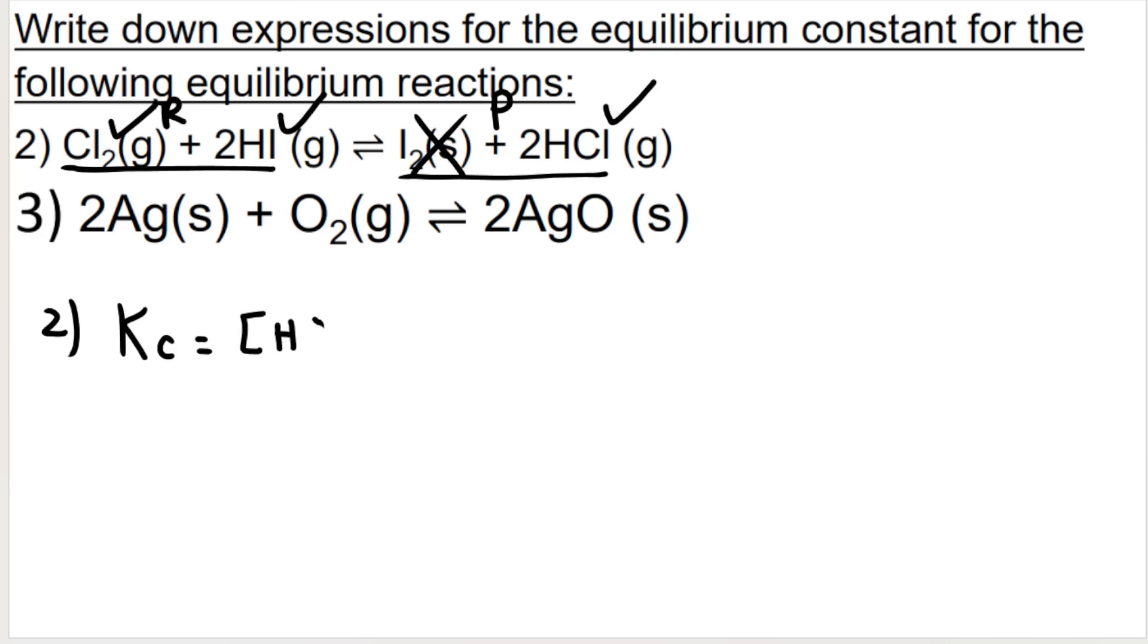and it's got a big two in front of it. So it's to the power of two, and at the bottom, Cl2 is my one reactant. There's no big number in front of it, and HI is my other reactant. It has a big two in front of it, so it's to the power of two. And that's it. That's your equilibrium constant expression. That's your Kc expression.